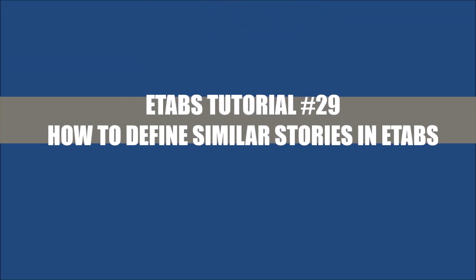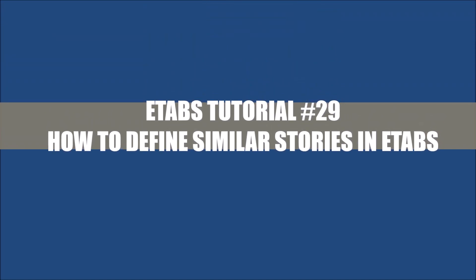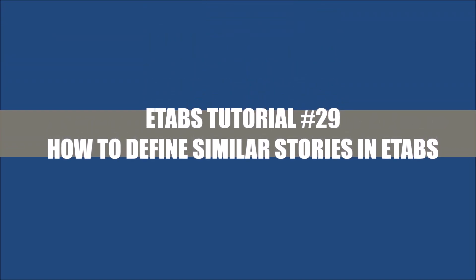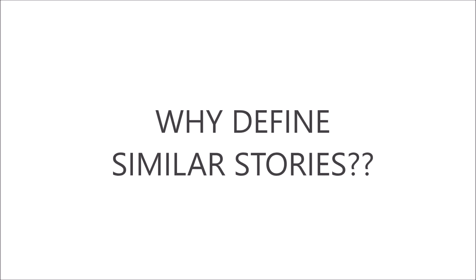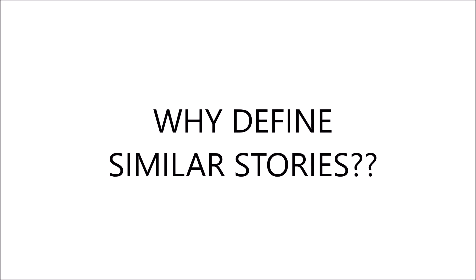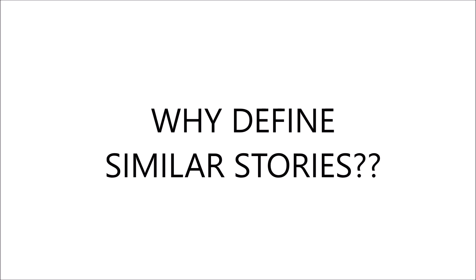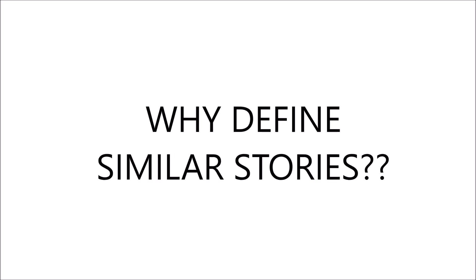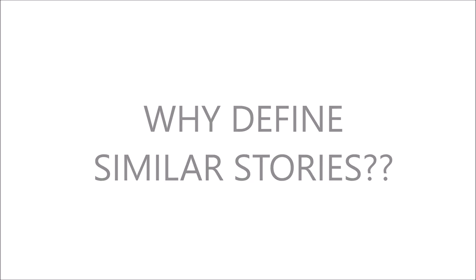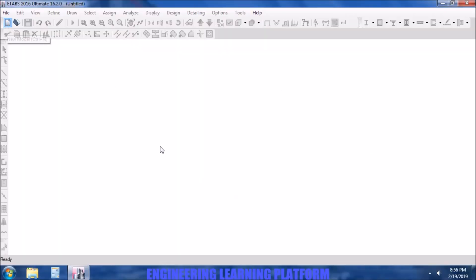In this video I am going to show you how to define similar stories in ETABS. First of all, we need to know why we define similar stories. In case of tall buildings or complex structures, we define similar stories which have similar framing systems or similar properties. If we delete one beam in a single floor part of a similar story, the change will be made to all similar stories.